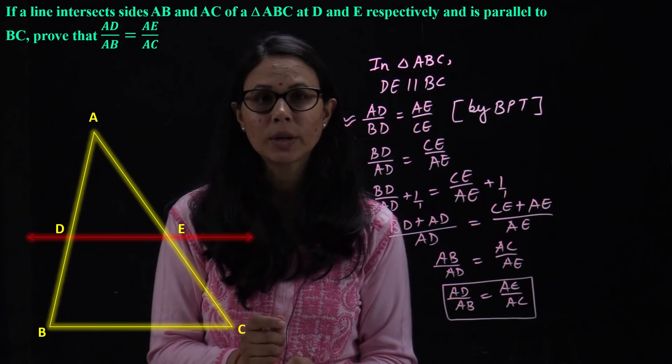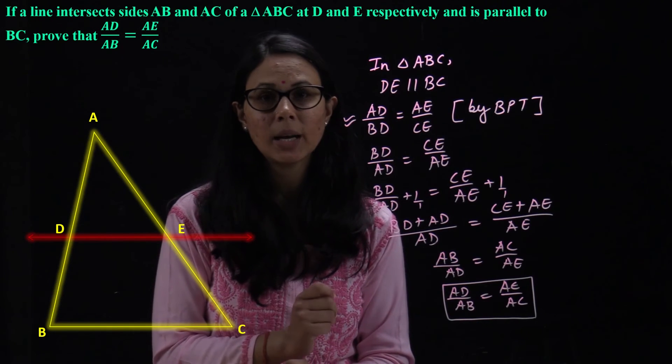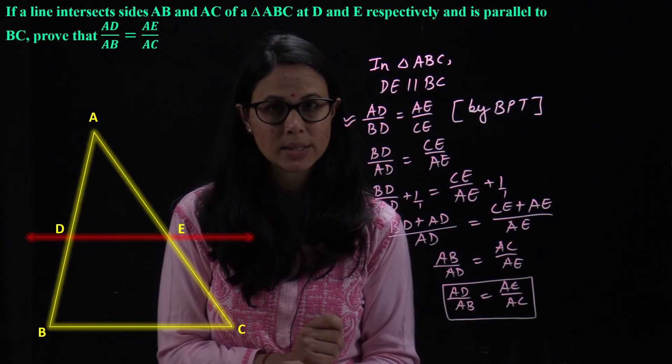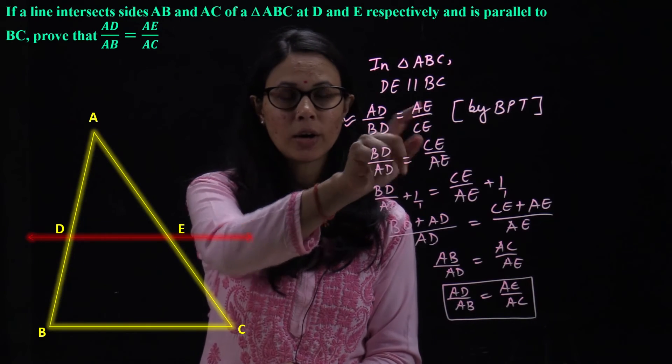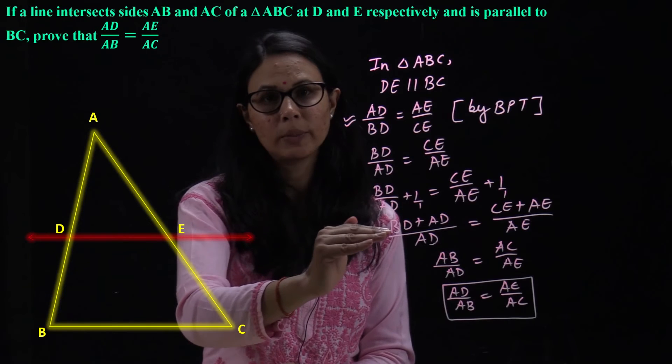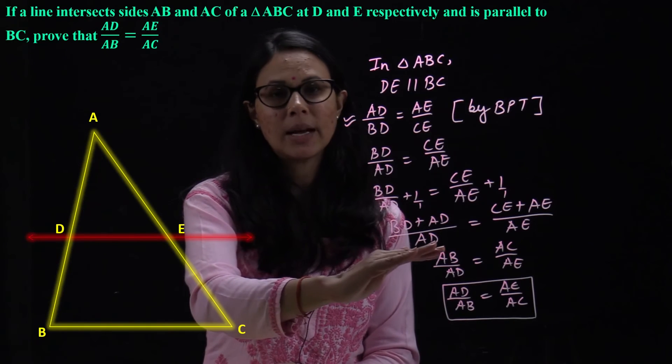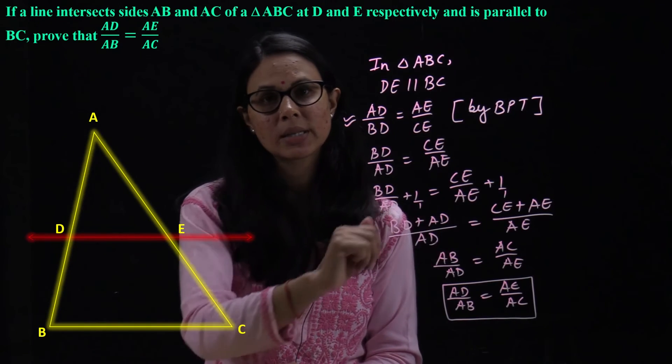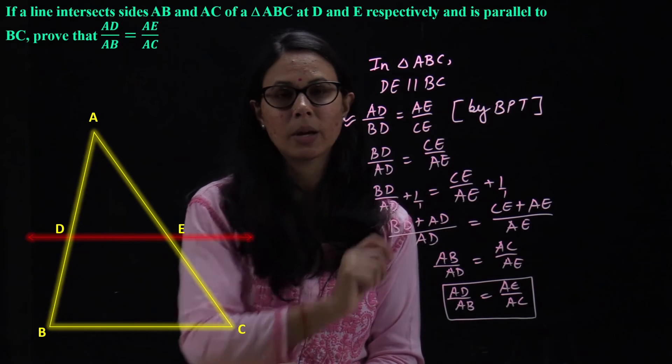Now, what we have to prove in the question, we have to prove AD upon AB is equal to AE upon AC. We need AD and AE. Right? So, the terms we need, we will put them in the numerator. Why? Because in the end, when we make the denominator same, then AD and AE will remain with us.